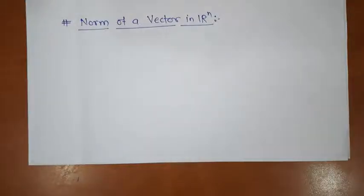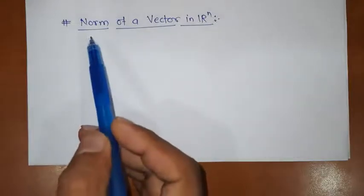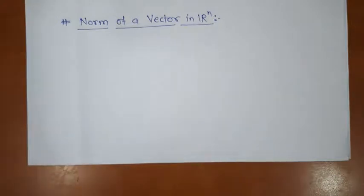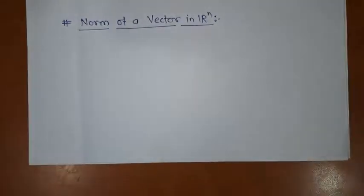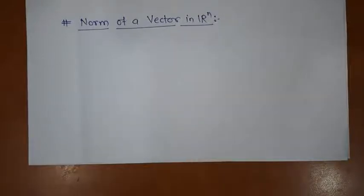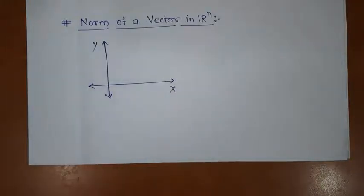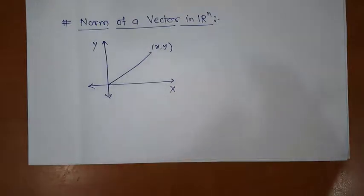Hi everyone. Today we are going to discuss this concept: norm of a vector in Rn. In simple words, norm means the distance of a point from the origin. Consider R2 with x-axis and y-axis. If we select any point (x, y) in R2, then the distance of this point from the origin is called the norm of that point (x, y).